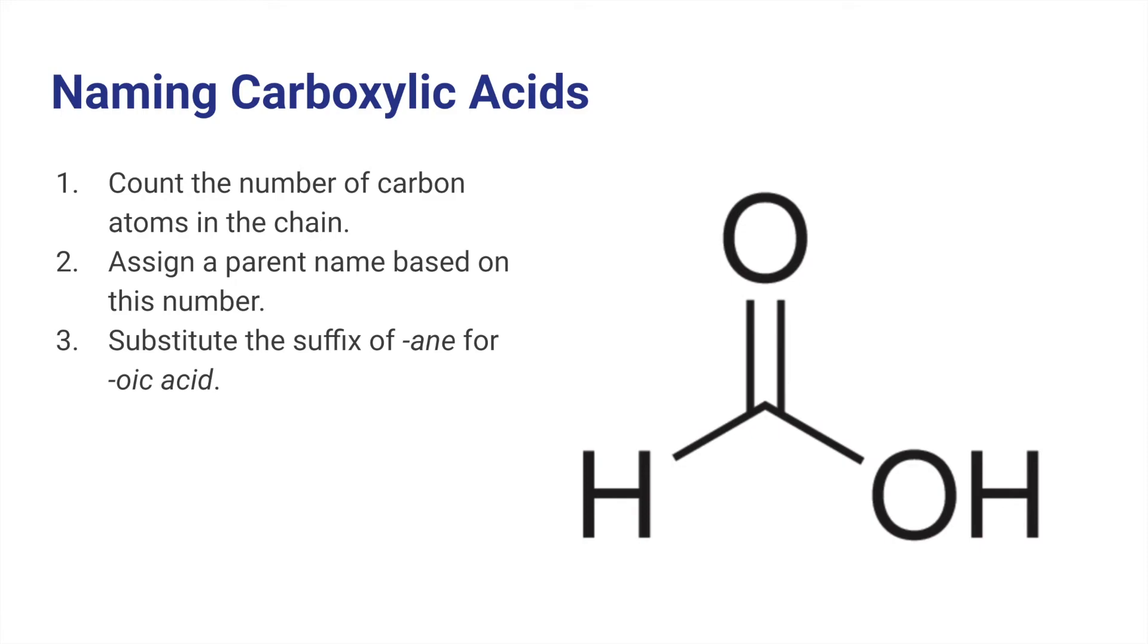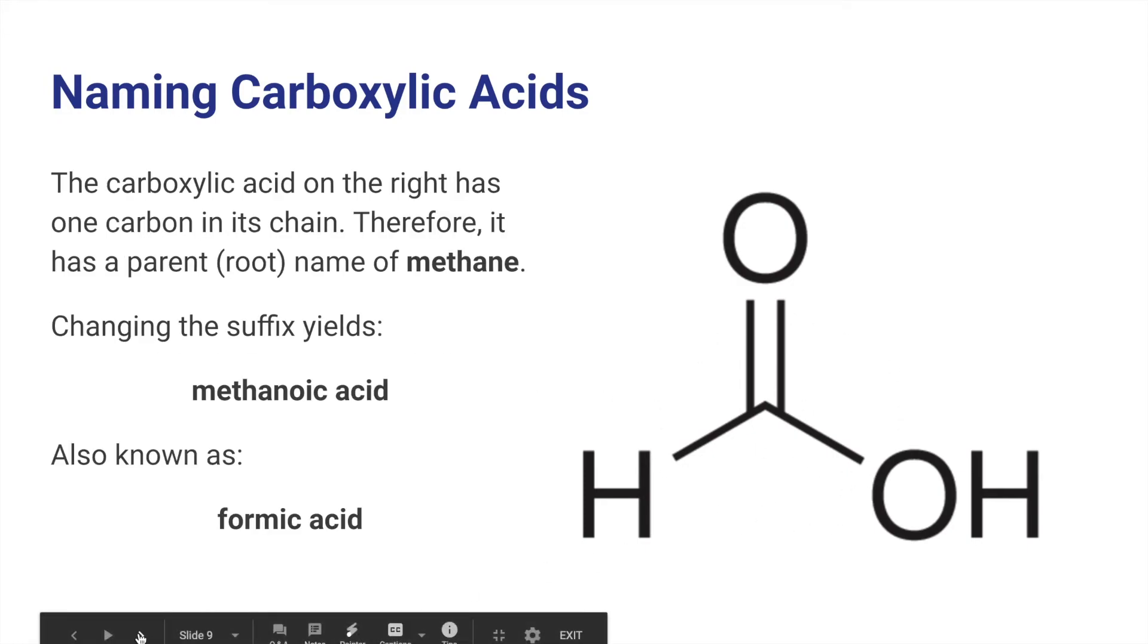How do we name these? Well, naming them is pretty simple. You count the number of carbon atoms in the chain. Then you assign a parent name based on that number. And then here's the big change. We need to substitute the suffix of ane for oic acid. And in this course, you're not going to be responsible for naming compounds that have carboxyl groups on alkenes or alkynes. So you're really just substituting the suffix of ane for oic acid. So this one has one carbon in the chain. So it has the root of meth and we change the suffix to oic acid. So this becomes methanoic acid.